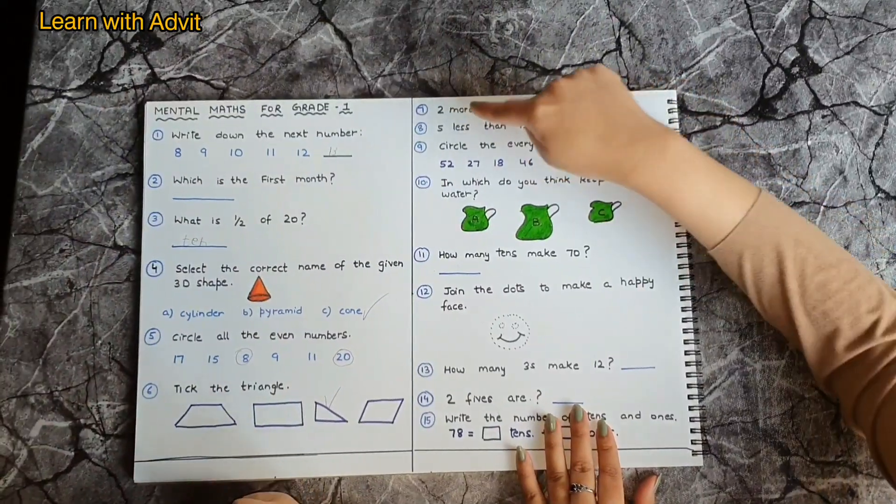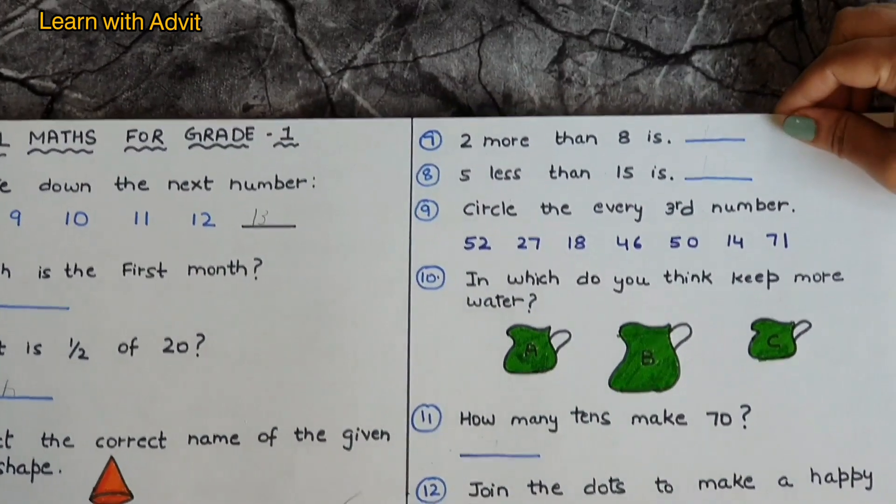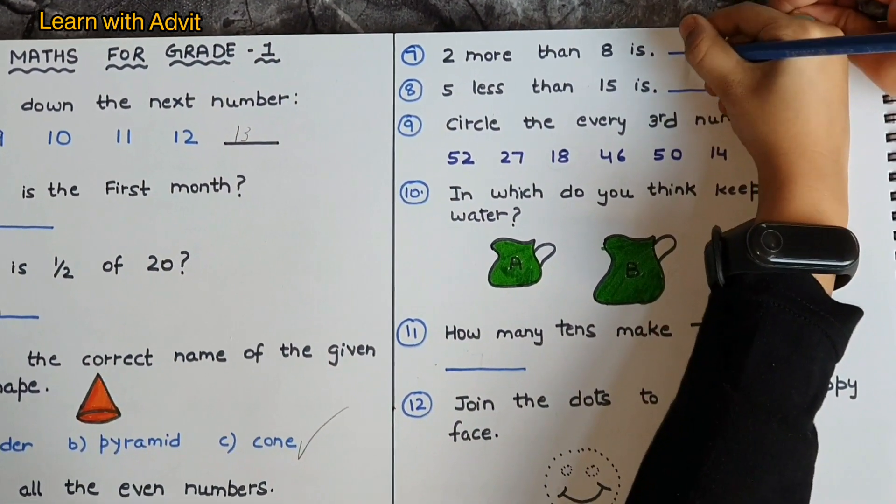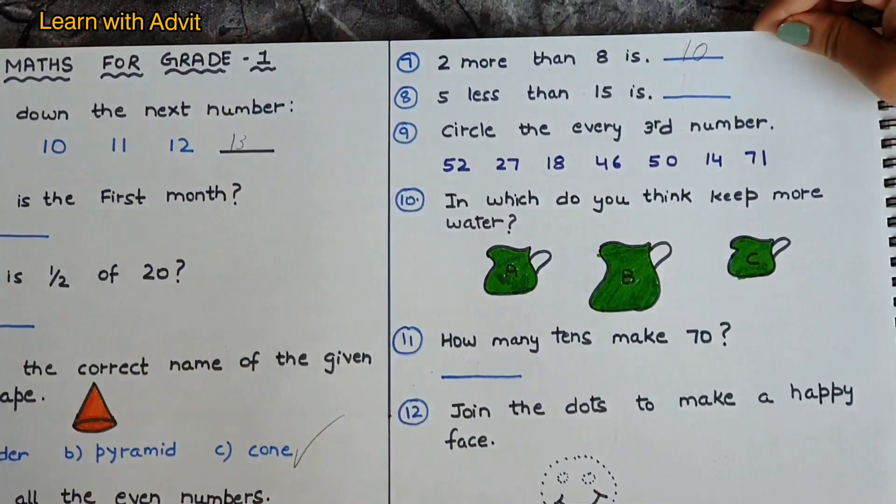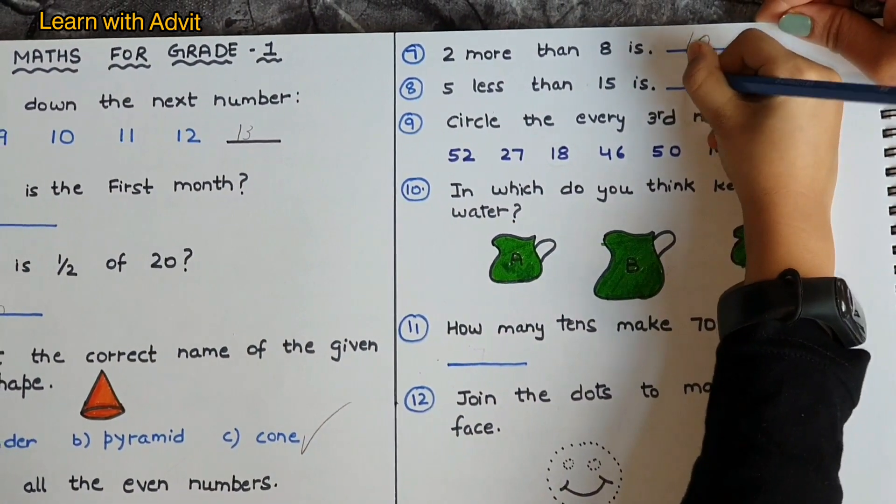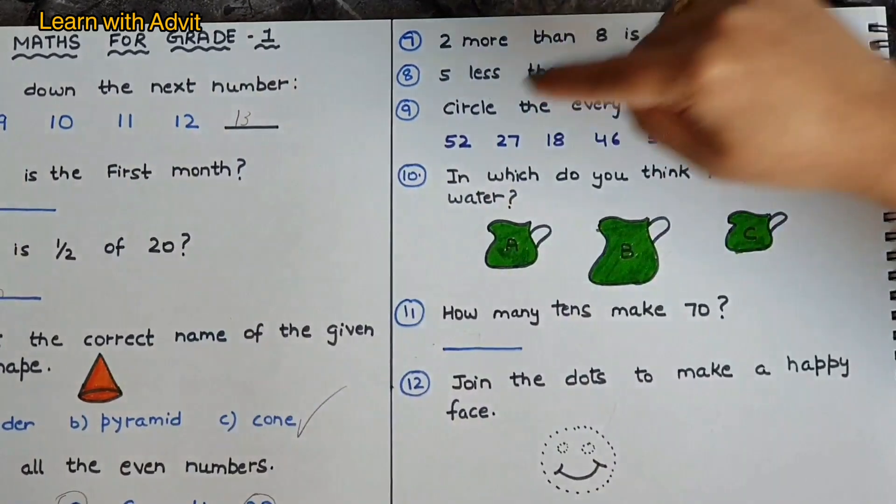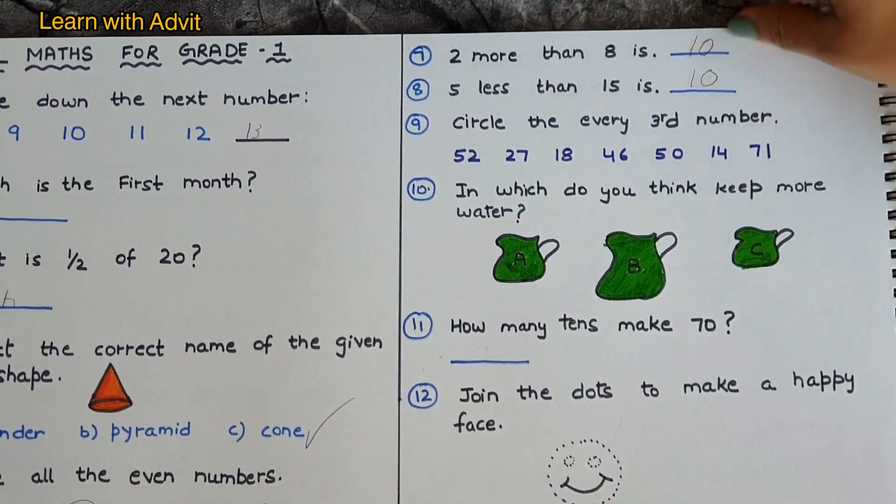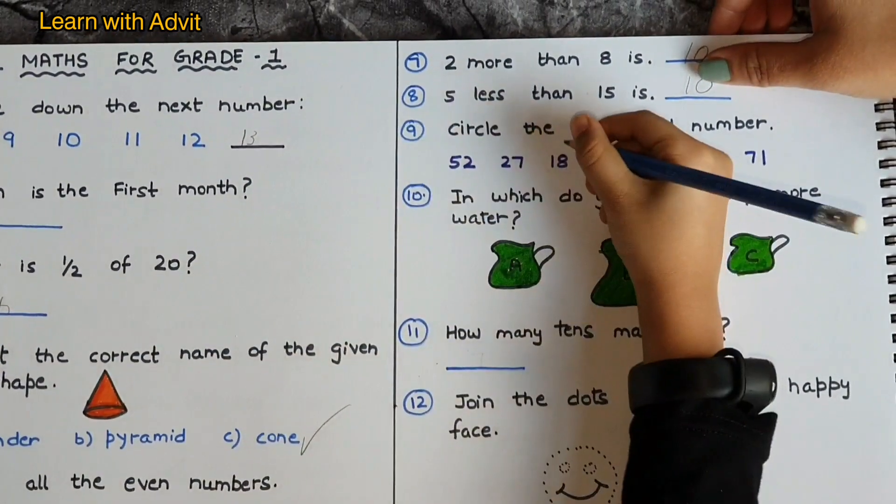There are some more questions. Two more than eight is ten. Five less than fifteen is ten again, yeah.